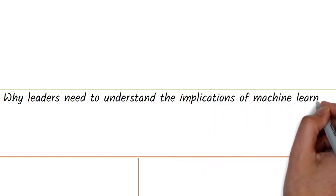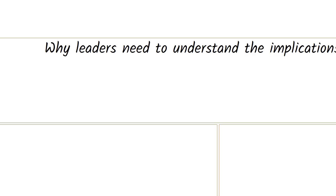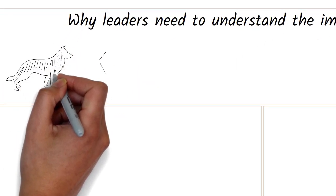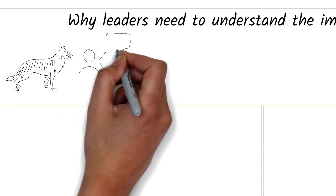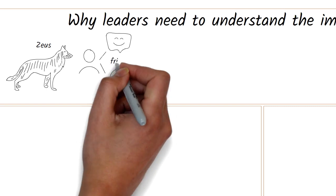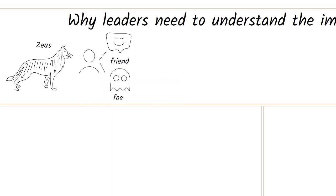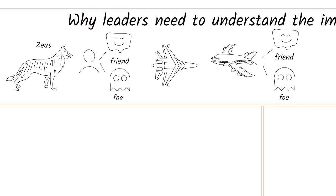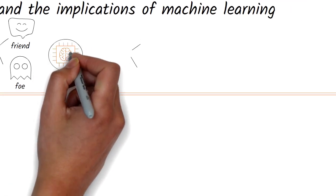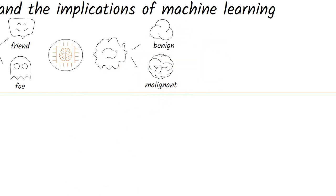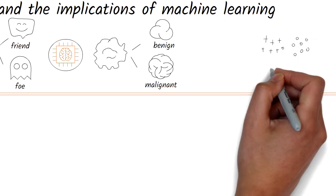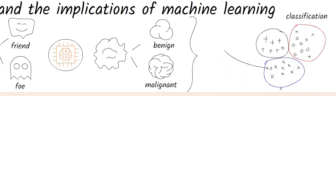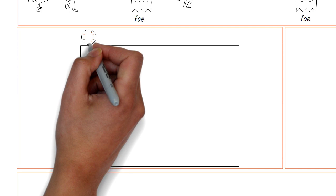Why leaders need to understand the implications of machine learning. We often make decisions in life based on data and observation. Even my dog Zeus does that — when he sees someone at the door, he instantaneously categorizes them as friend or foe and reacts accordingly. A misclassification could result in a bite. A fighter pilot in combat makes a similar instantaneous friend-or-foe decision. An AI system may classify a tumor in a radiograph as benign or malignant. These types of problems are called classification problems, and a misclassification could potentially be the difference between life or death.